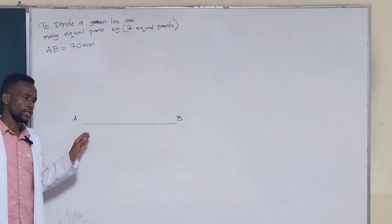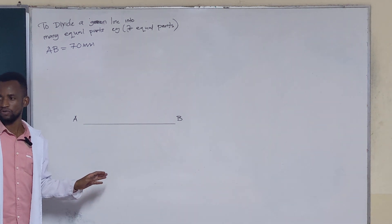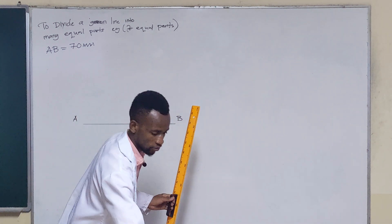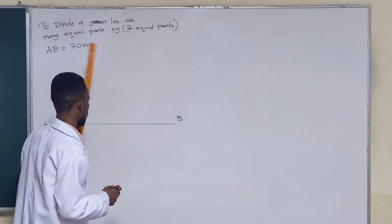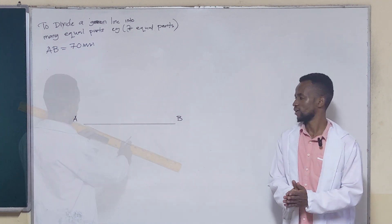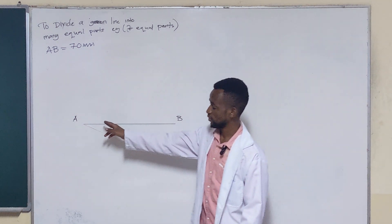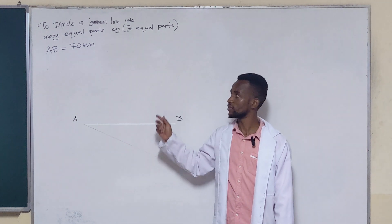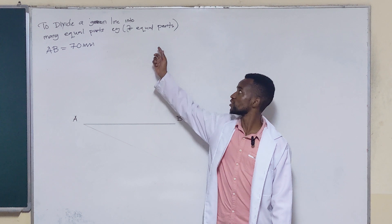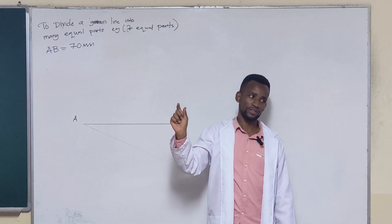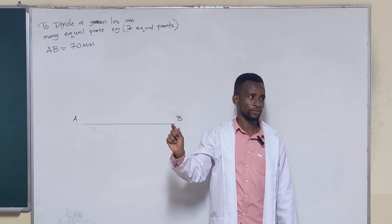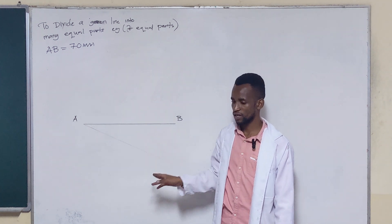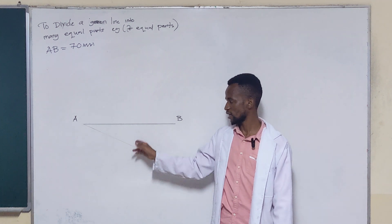This slant line can go down or up — just a slant. It should be of any length and at any angle; no restrictions. So here we have our line AB — remember, this is the line we want to divide into seven equal parts. If line AB is 70 millimeters, then dividing it into seven equal parts gives us 10 millimeters apiece. So we draw this slant line of any length and at any angle.